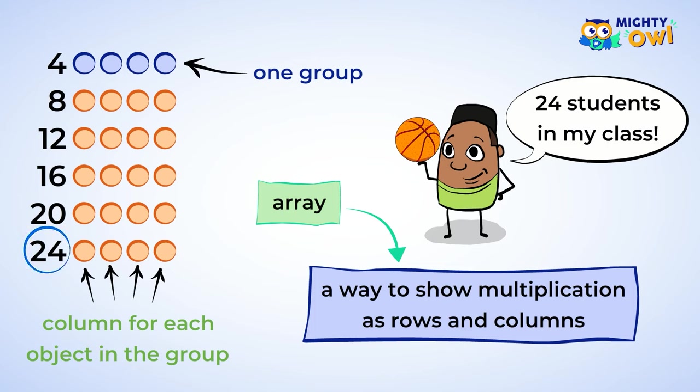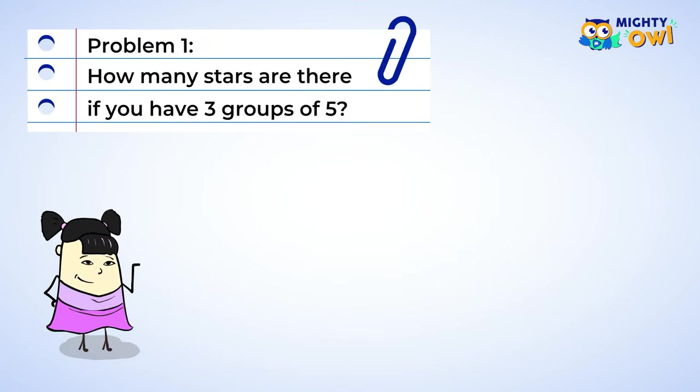Hopefully your team wins. Now that you've seen how to create an array from a multiplication problem, try turning this multiplication into an array to solve it. Okay, you have three groups of stars.